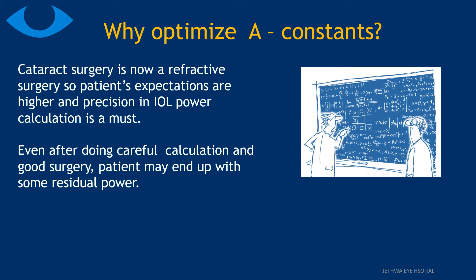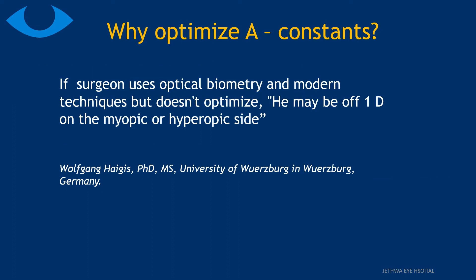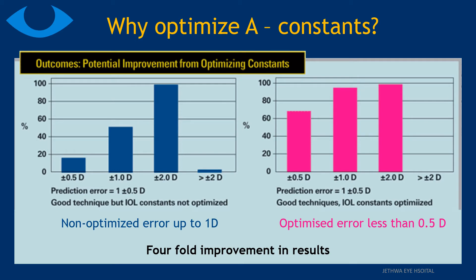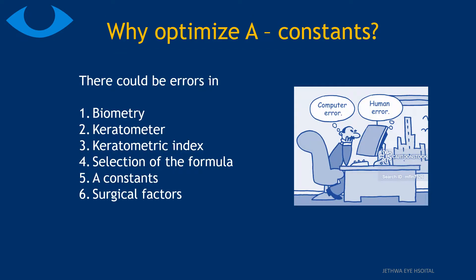Why should we optimize the A-Constant of IOL power? Today, cataract surgery is a refractive surgery, so patient expectations are higher and precision in IOL power calculation is a must. Even after careful calculation and good surgery, the patient may end up with some residual power. There is a four-fold improvement in postoperative targeted refraction when we optimize the A-Constant.